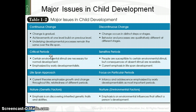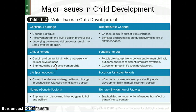Critical periods are specific times during development when a particular event would have the greatest consequences — often thinking about negative events where, if there's trauma, it would be much more likely to have an impact. Sensitive periods refers to times when people are more susceptible to different environmental stimuli, but it's not saying it's quite so critical — the absence of a stimulus won't guarantee any particular outcome one way or the other.